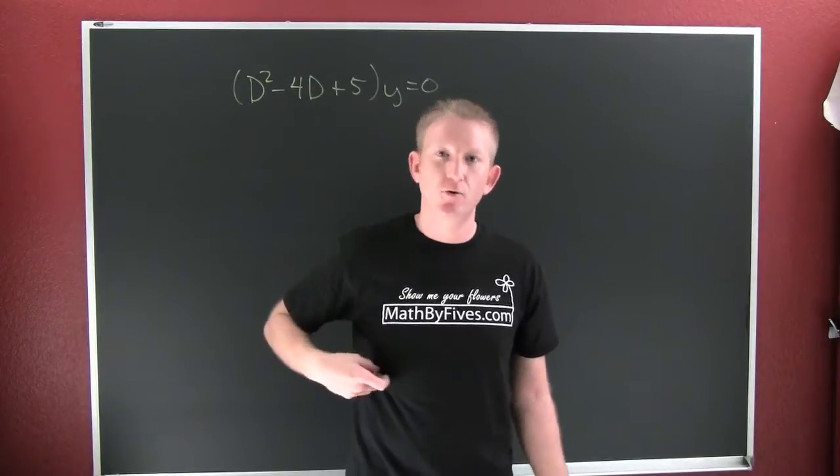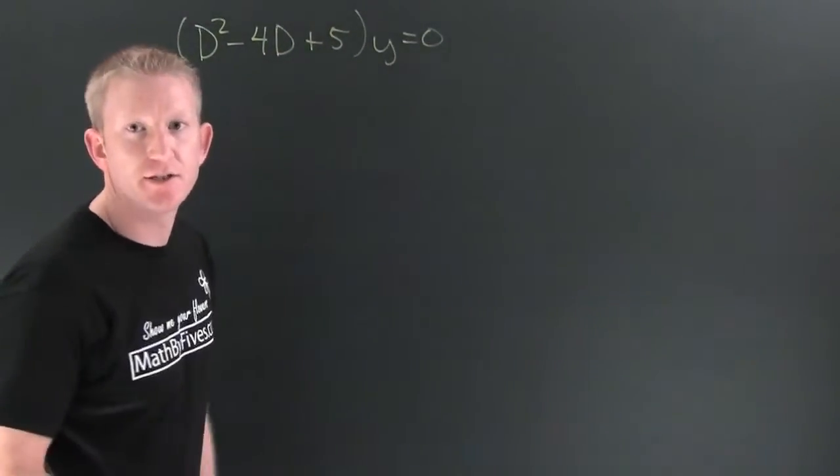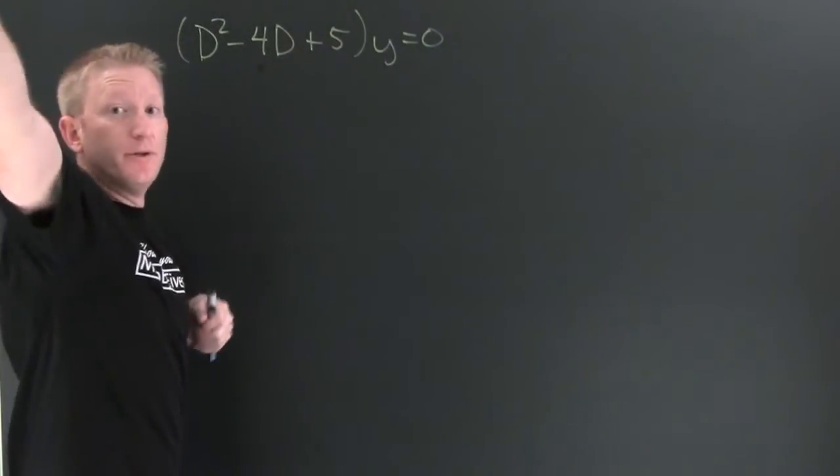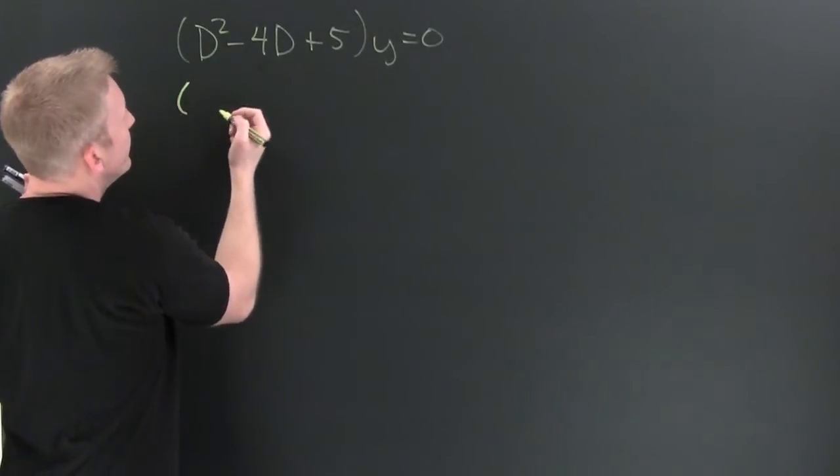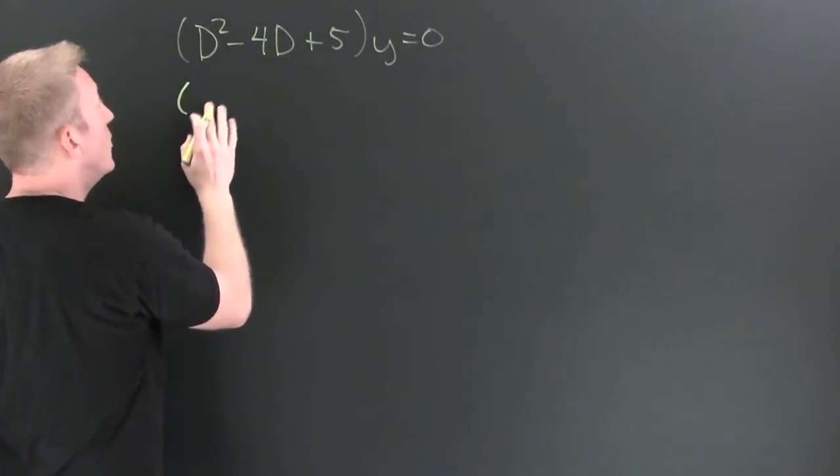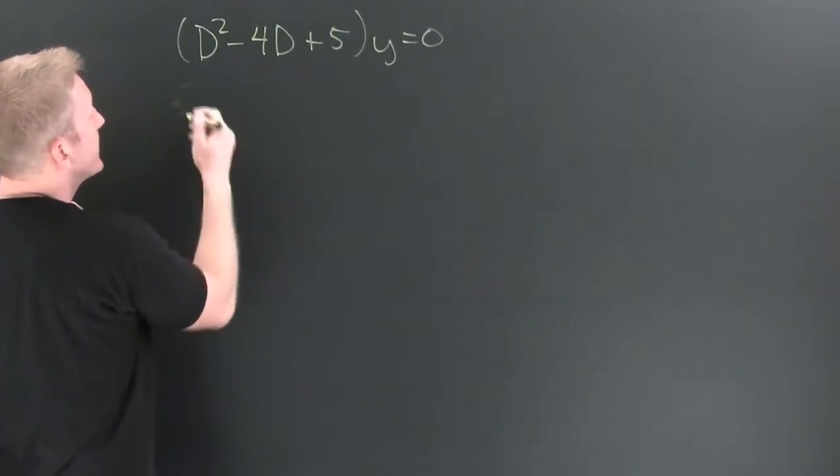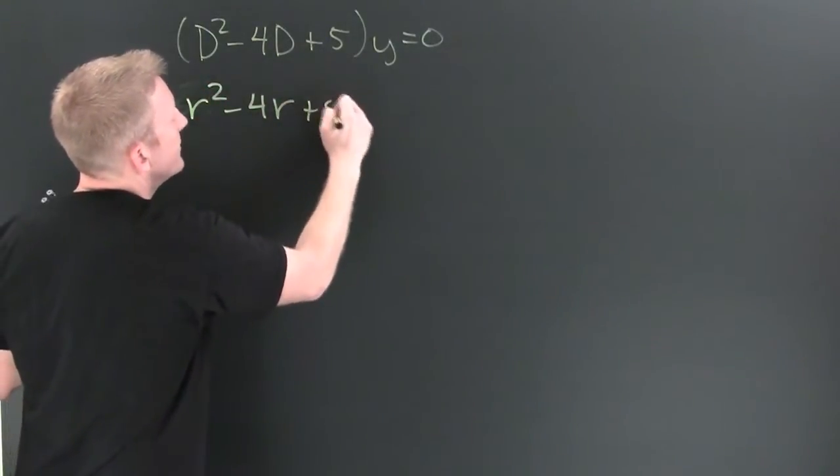Operator notation, constant coefficients, factorable. Here we go, this is going to be factors of five. D squared minus 4D plus 5, y equals 0. This has characteristic equation r squared minus 4r plus 5 equals 0.